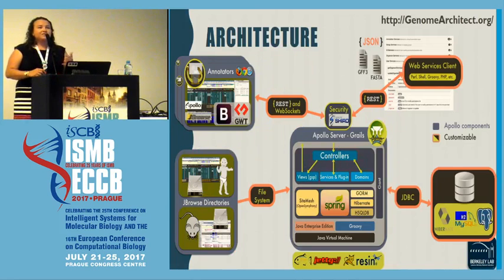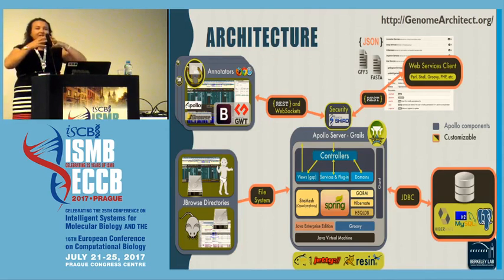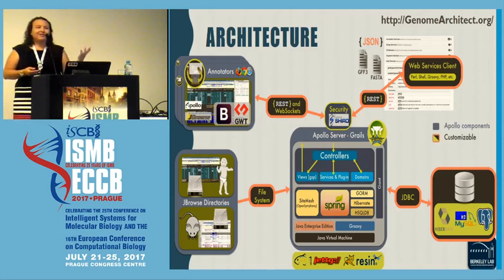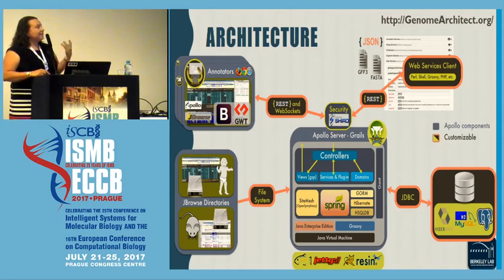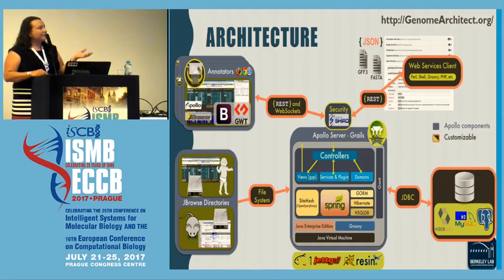To get into the technical aspects, this is what the architecture looks like — three main components. The client is where curators interact with the browser. This is a plugin that sits on top of the popular JBrowse genome browser, so for many of you who have used JBrowse but not Apollo, it will still be very familiar. The plugin allows certain editing functions and communicates with an annotation editing engine as well as a server-side data service that saves everything into the database. Some components are customizable, such as the database type and the file system used to access JBrowse.